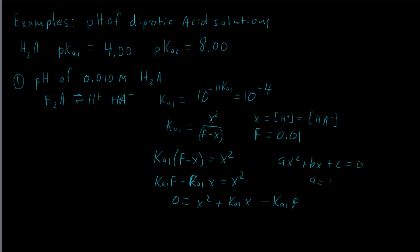In our quadratic, a equals 1, b equals Ka1, and c equals negative Ka1·F. Be careful with that negative sign — Ka1 times F is the last constant and must carry the negative sign. So you'll want to solve the quadratic equation using these values.